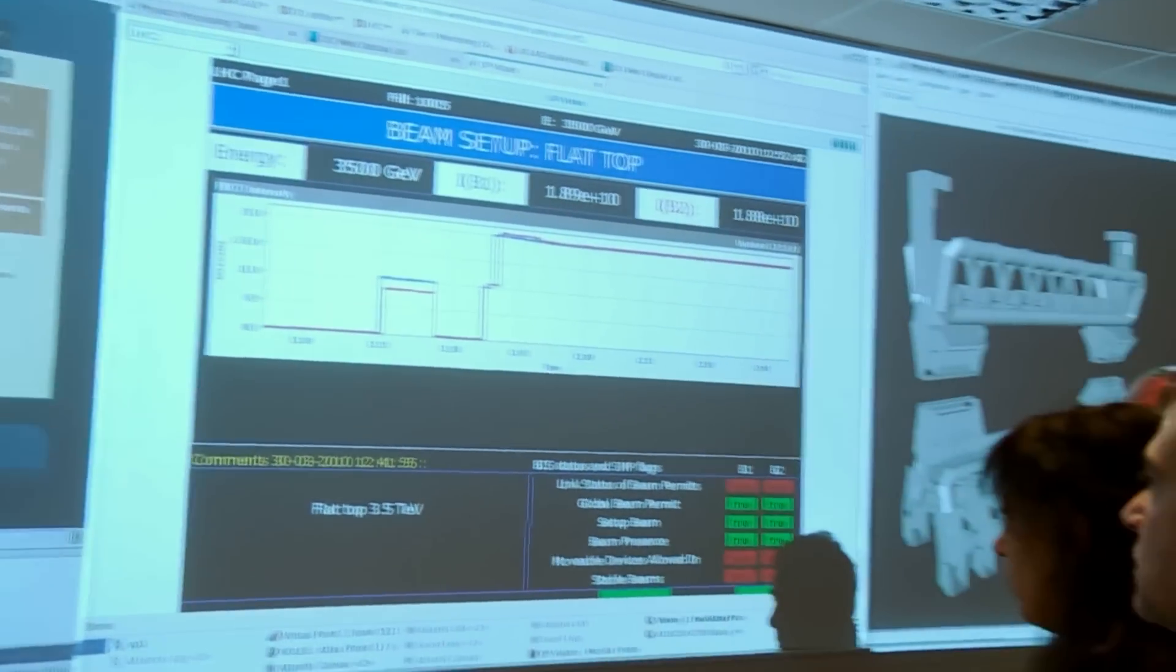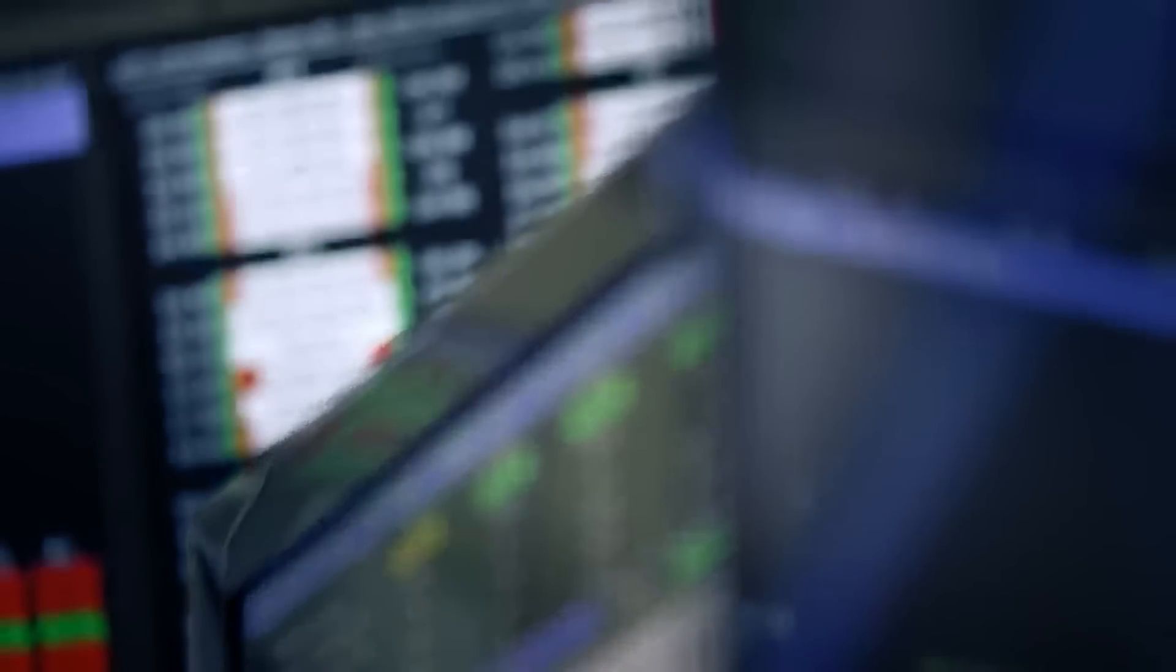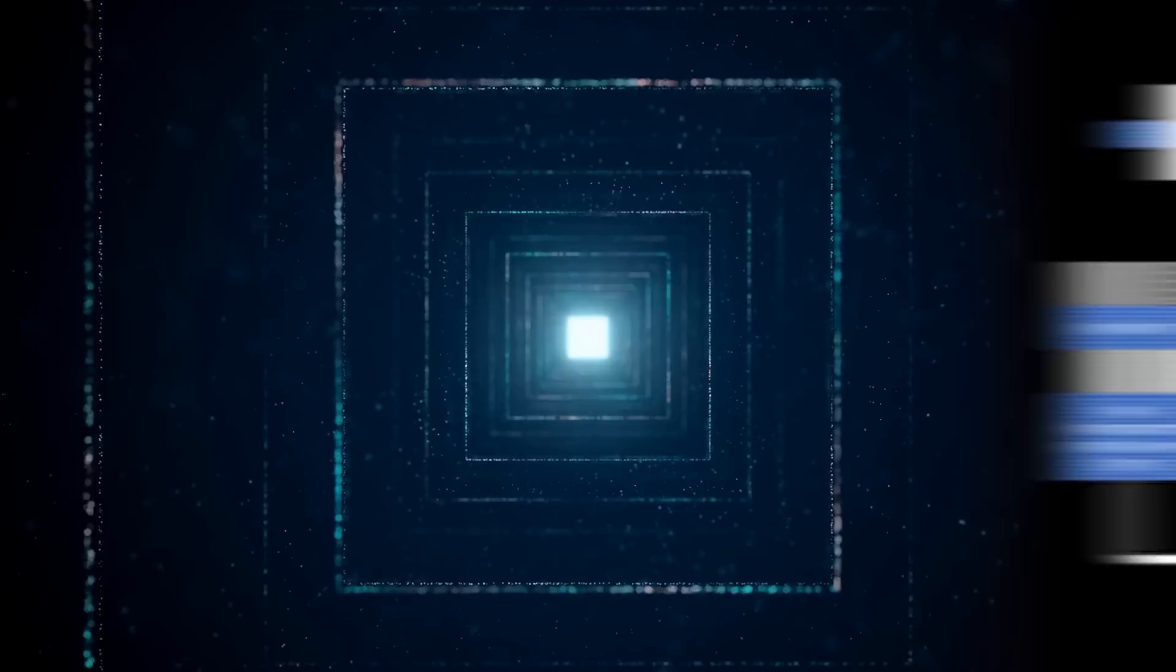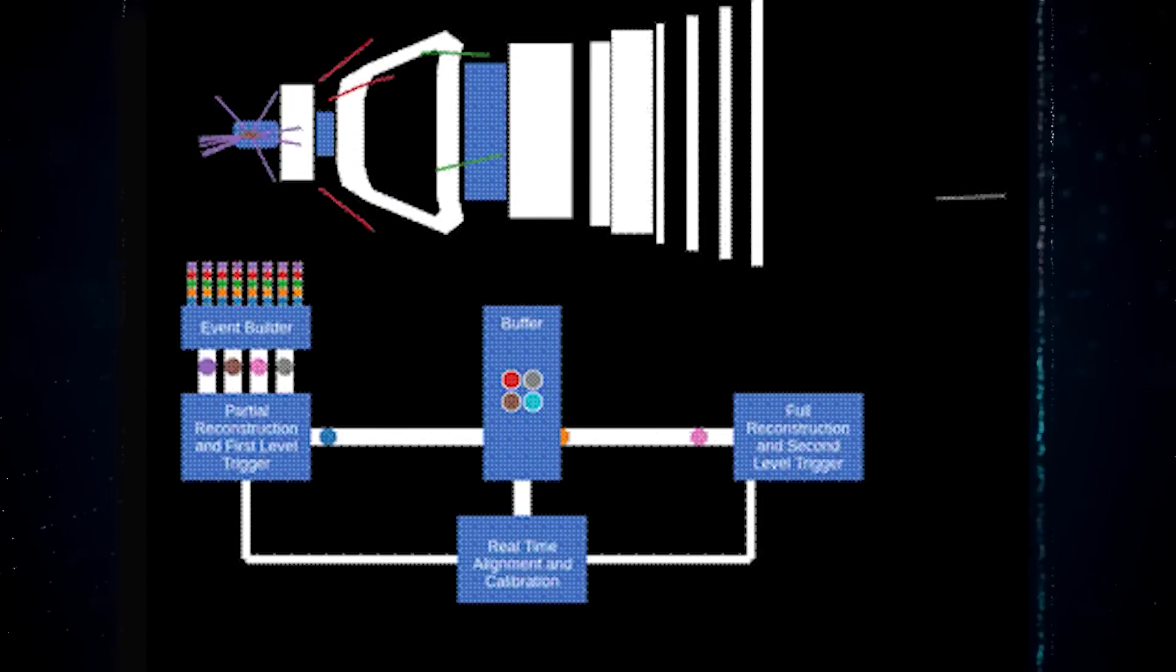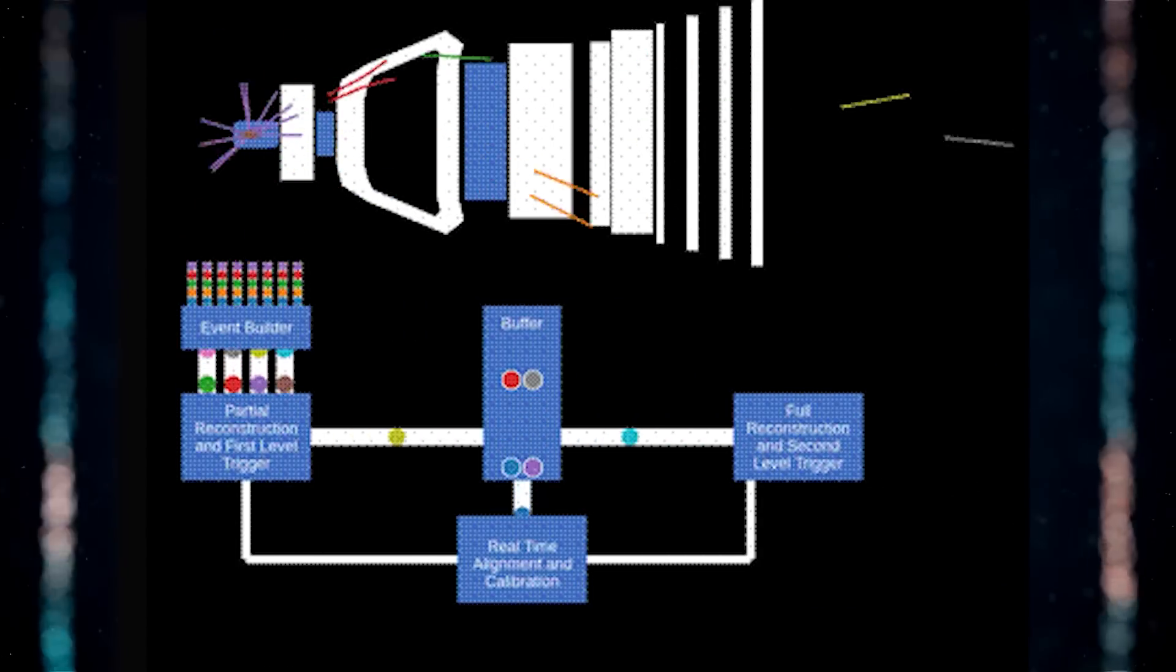Later, in offline analysis, important data is used to calibrate and adjust LHCB's sub-detectors before analyzing the stored data for physics analysis.